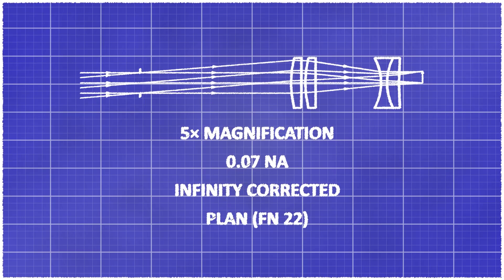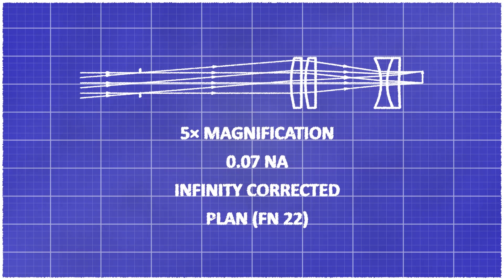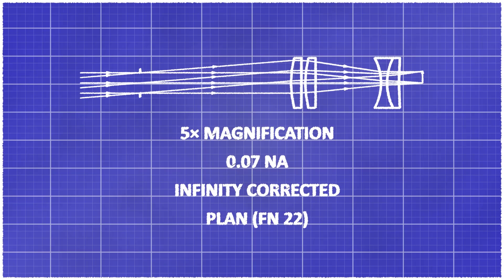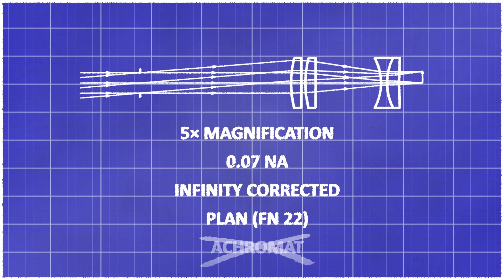It is a plan objective because it has a limited field curvature. Moreover, we may say that it has a field number of 22 because that is the sensor size covered in the standard microscopy setup so that the objective still has high performance. In this case, that means we can study objects that are about 5 mm diameter maximum. But it is however not achromatic because it was not corrected for color aberration.